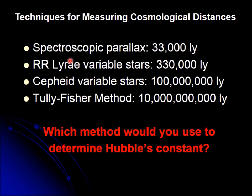The variable stars would allow you to calculate distances anywhere between 330,000 all the way to 100 million light years, depending on the type of variable star you're looking at. And the Tully-Fisher method would allow you to go all the way to 100 million light years. Let us review these in turn.